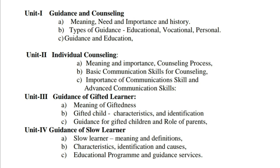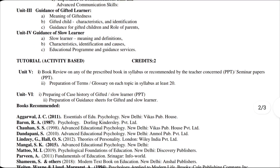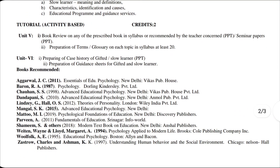Unit 3 is Guidance of Gifted Learners: A. Meaning of giftedness; B. Gifted child — characteristics and identification of gifted child; C. Guidance for gifted children and role of parents. Unit 4 is Guidance of Slow Learners: A. Meaning and definitions of slow learner; B. Characteristics, identification, and causes of slow learning; C. Educational programs and guidance services for slow learners. Tutorial is activity-based, 2 credits. Recommended book: Essentials of Educational Psychology by J.C. Agarwal.